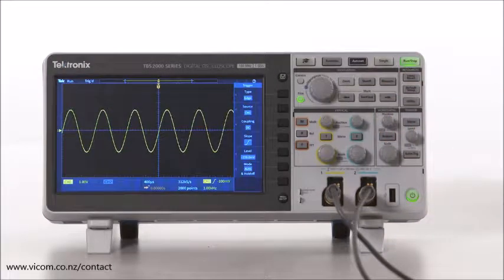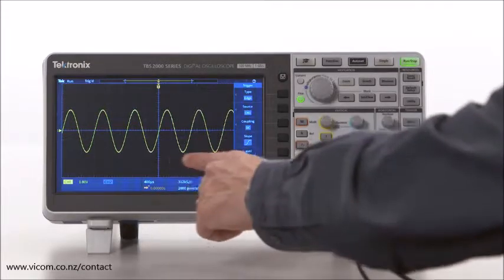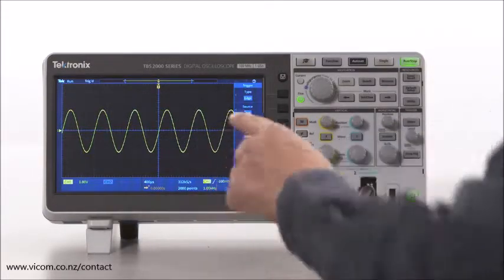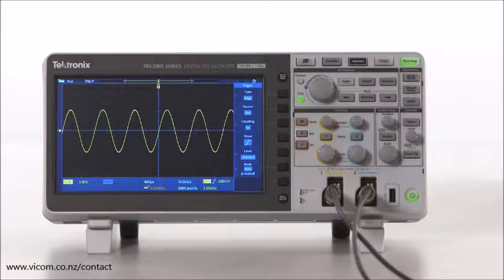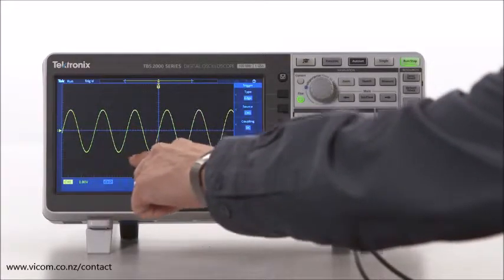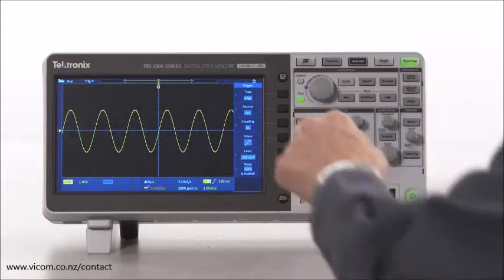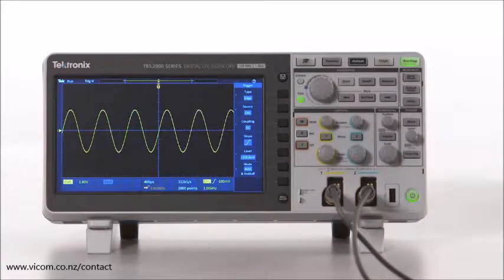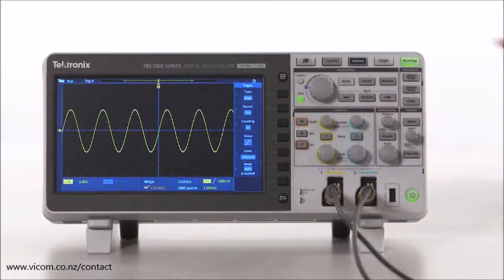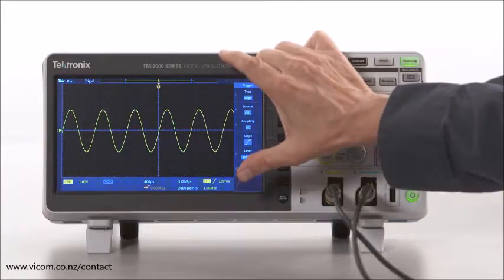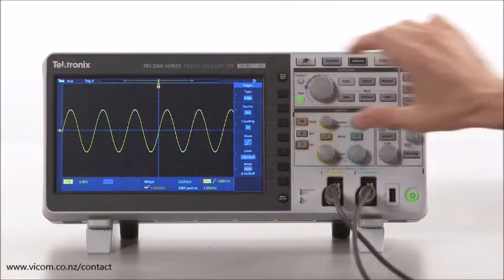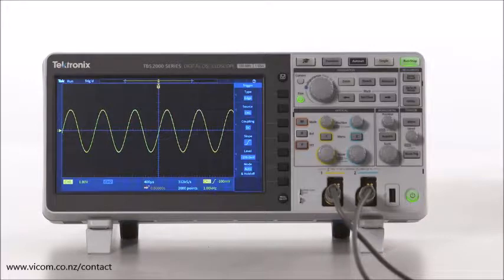The simplest way to get a quick estimate of time and amplitude measurements is by using the Graticule or grid on the scope's display. The Graticule is just a type of grid. The TBS 2000 Graticule has 15 horizontal divisions. Most scopes have 10. It has 10 vertical divisions. Some scopes have 8. Each major division is broken up into 5 minor divisions.